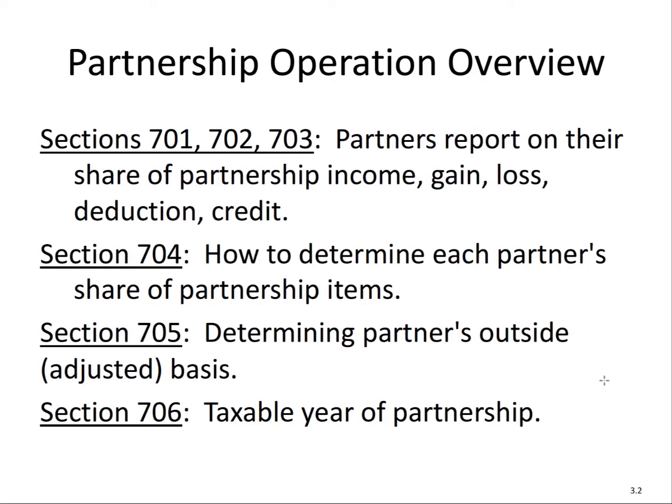Sections 701, 702, and 703 deal with partners and how they report their share of partnership income, gain, loss, deduction, and credit. Section 704 determines each partner's share of partnership items — this is really about how we allocate. It's important to understand the distinction between allocate versus distribute.